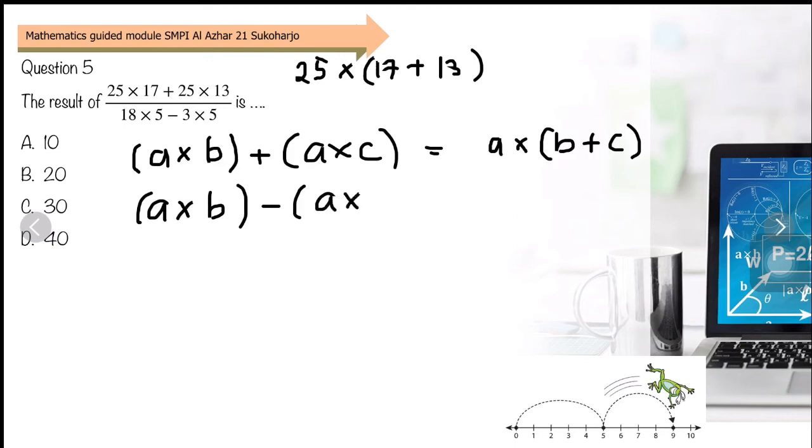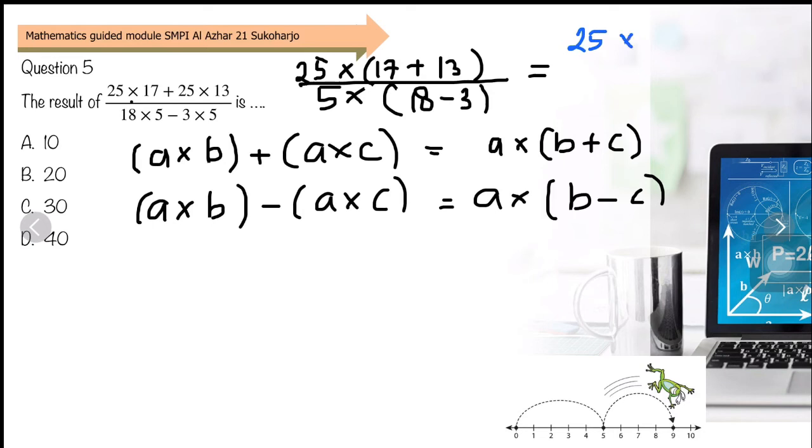Question 5: This is a mixed operation with multiplication, addition, and division. But remember the distributive property: A times B plus A times C equals A times (B plus C). The top is 25 times 17 plus 25 times 13, which can be written as 25 times (17 plus 13). For subtraction, it's the same: A times B minus A times C equals A times (B minus C). The bottom has 5 in common, so we change it to 5 times (18 minus 3). This is 25 times 30 divided by 5 times 15. We can simplify: 30 divided by 5 is 6, divided by 15 gives 2. So it's 5 times 2, which is 10. The answer is A.